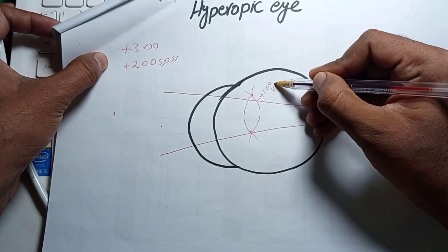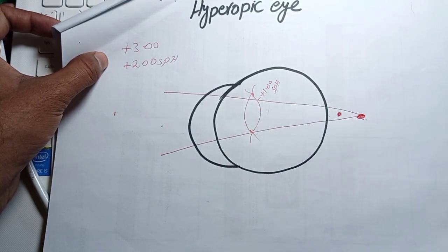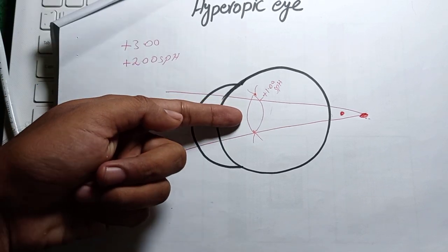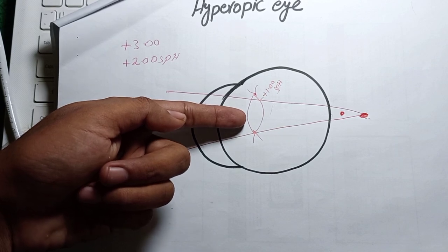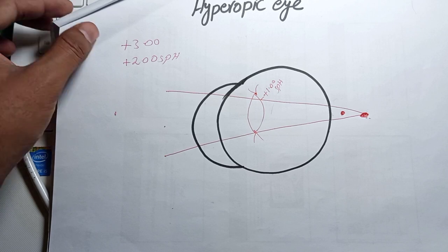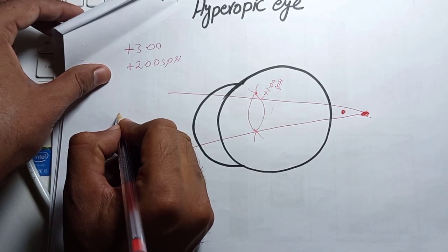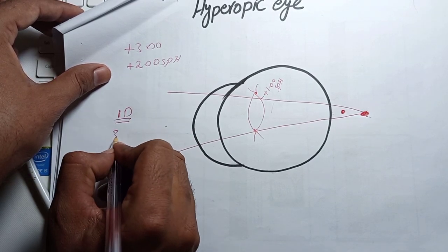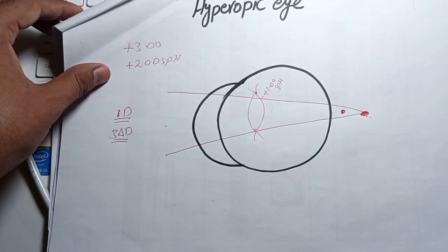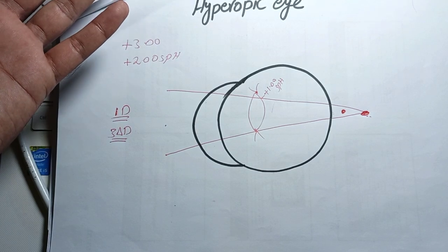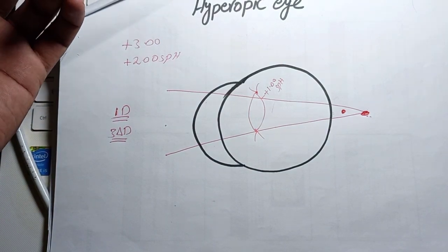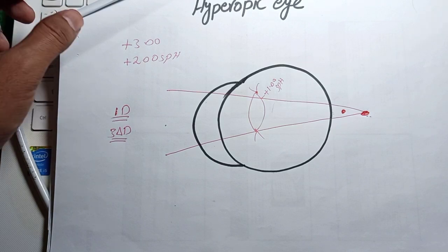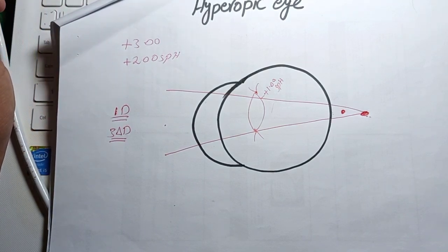Due to the deficiency of plus power, the crystalline lens will accommodate internally by an extra plus one diopter to compensate. This excess use of accommodation causes asthenopic symptoms. Also, due to the ACA ratio — where one diopter of accommodation causes approximately three prism diopters of convergence — excess accommodation increases the risk of convergent squint. That is why we must prescribe the full plus correction.